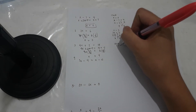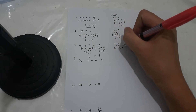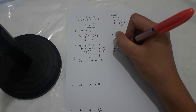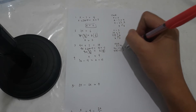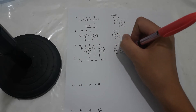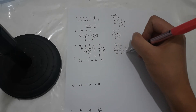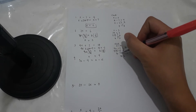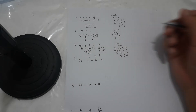To check: x should be equal to 4. Substitute into 4x plus 2 is equal to 18: 4 times 4 plus 2 is equal to 18 — that's 16 plus 2 is equal to 18, and 18 is equal to 18. Correct.